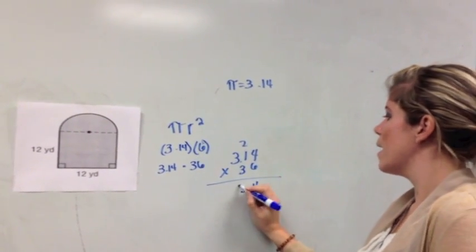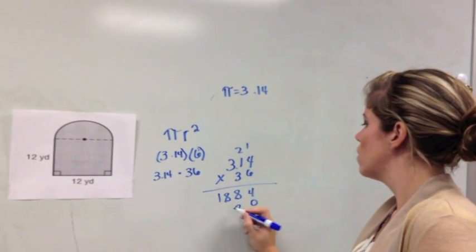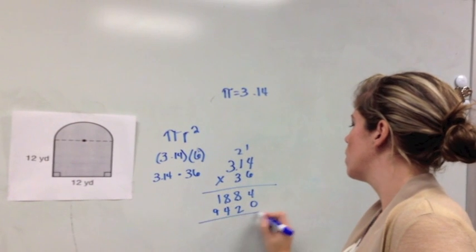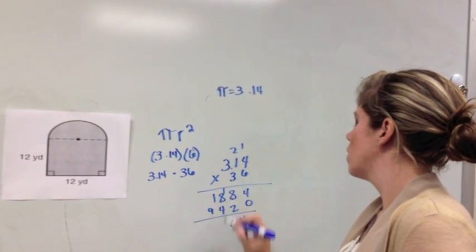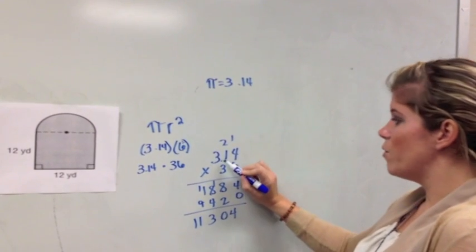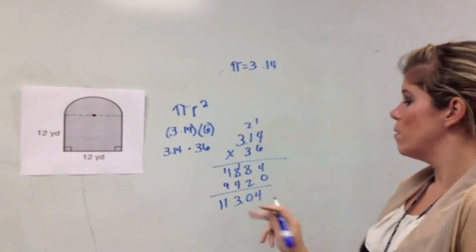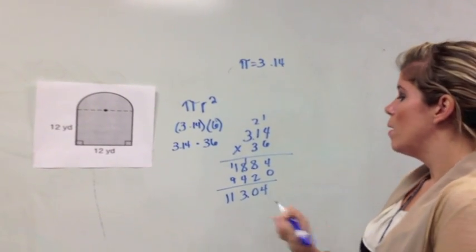6, 8, 18. Okay, and then I have to move my decimal back two places. And I get 113.04.